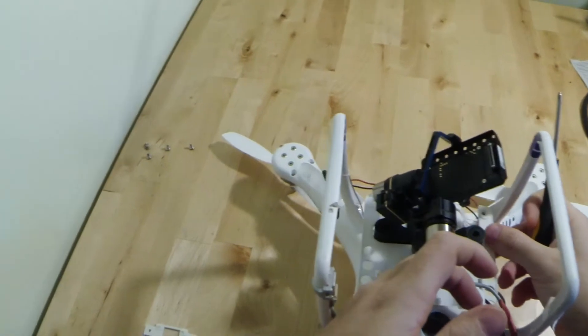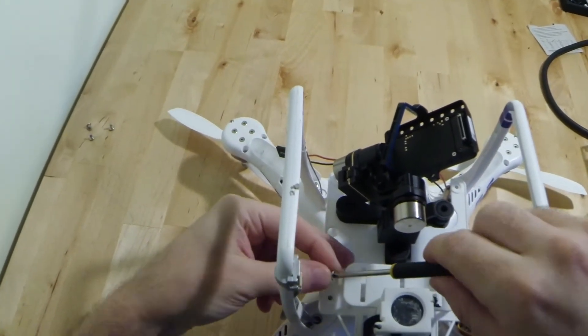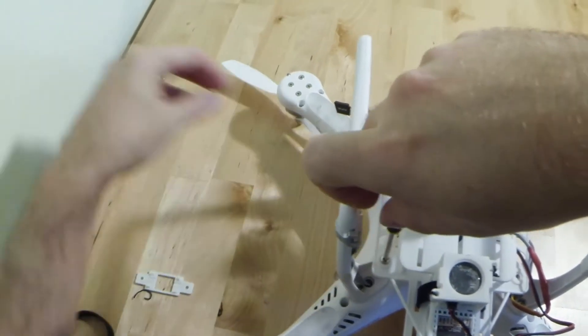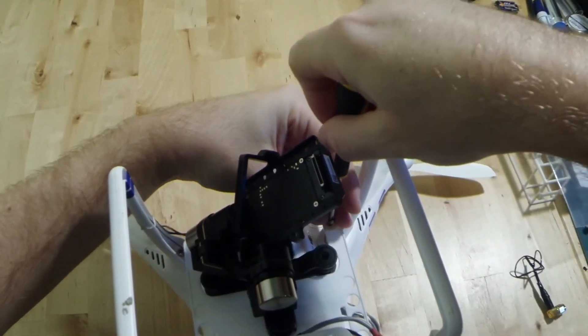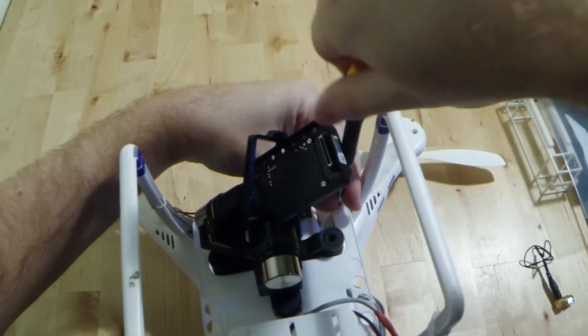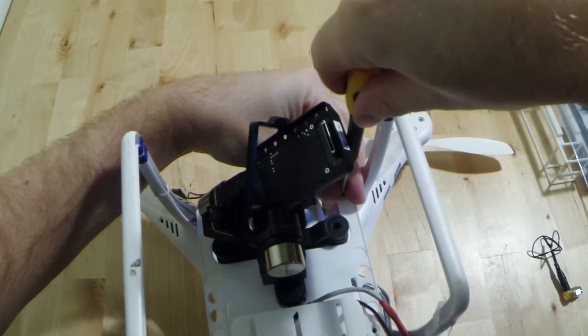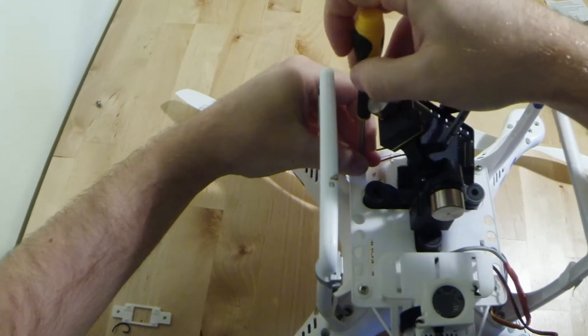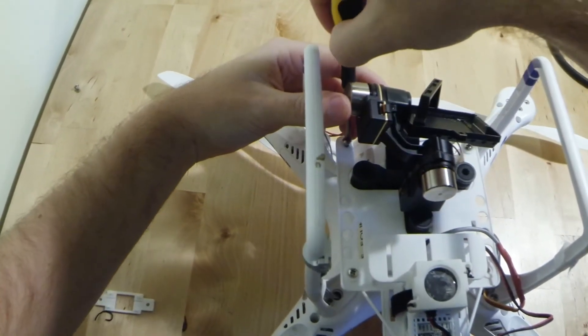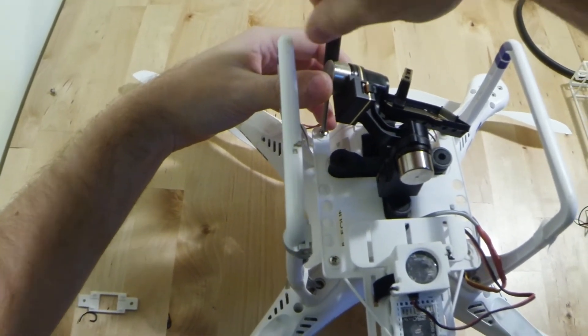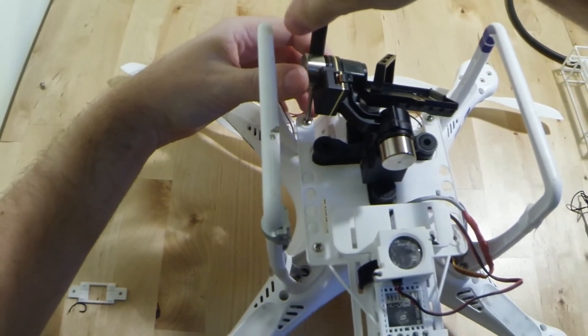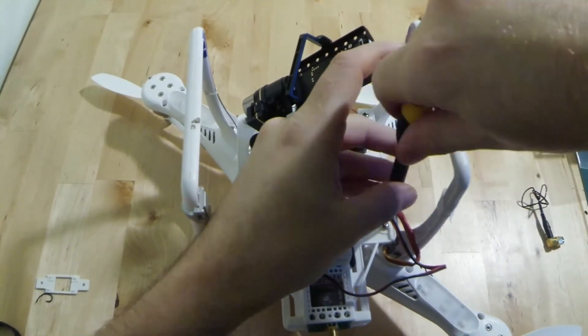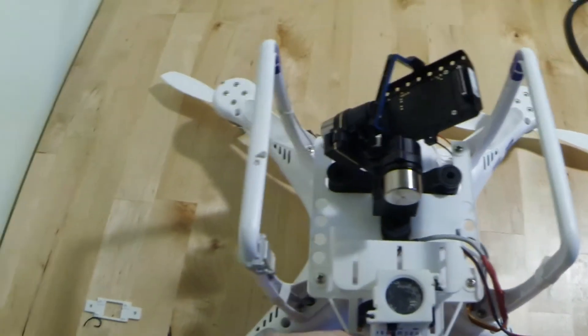Grab ourselves a screwdriver. Remembering not to use one with magnets. And we simply thread that down. That one. I'll leave it loose for the moment. Do the corners. One there. And the final one here. So, that's everything mounted into place.